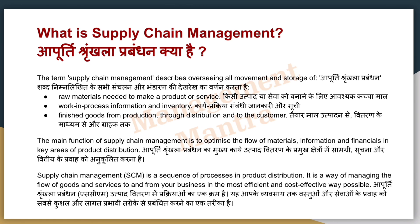The main function of supply chain management is that the material flow, information flow, finance flow and product distribution happen in the right way. Supply chain management is a sequential process in which you distribute the product and manage the goods and services flow in any business.